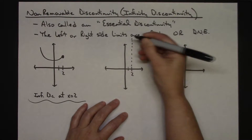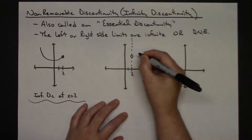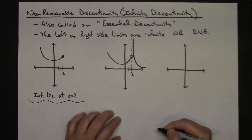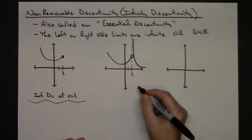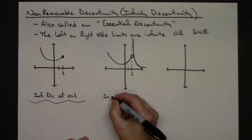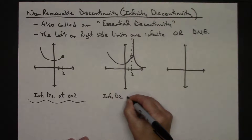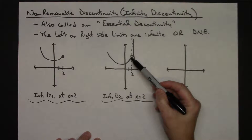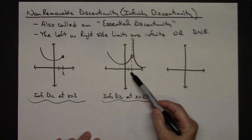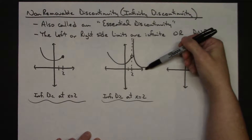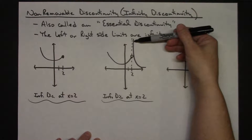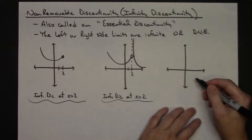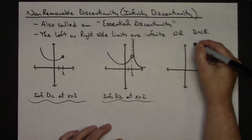The second scenario involves a vertical asymptote at x = 2, with an open dot and the graph going to infinity on both sides. This is also a non-removable infinite discontinuity at x = 2. The limit from the left as x approaches 2 does have a specific value, but the limit from the right is infinite — and because it's infinite, that qualifies it as an infinite discontinuity.